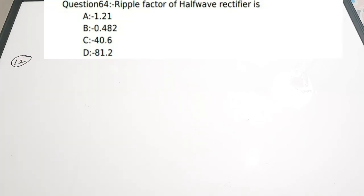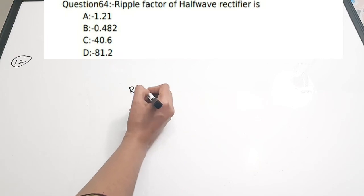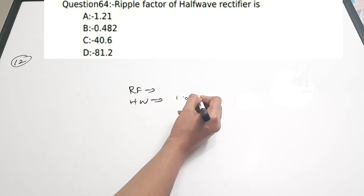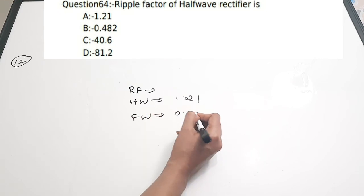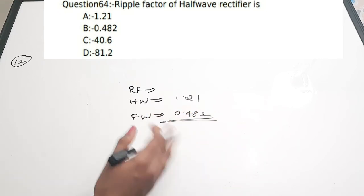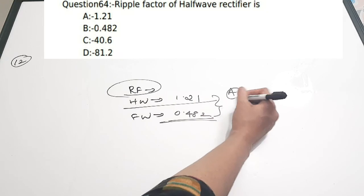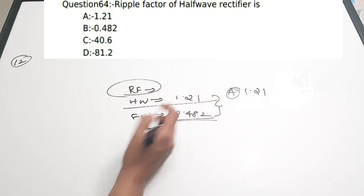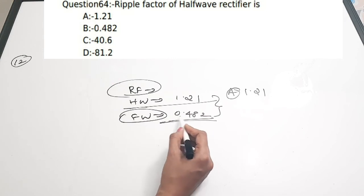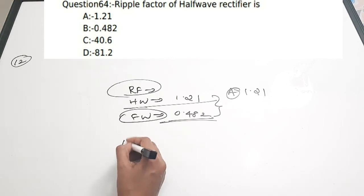Question 12: Ripple factor of a half wave rectifier is — A) 1.21, B) 0.482, C) 40.6, D) 81.2. The ripple factor for a half wave rectifier is 1.21 and for a full wave rectifier it is 0.482. You should know both values by heart. Since the question asks about the half wave rectifier, the correct answer is option A, 1.21.